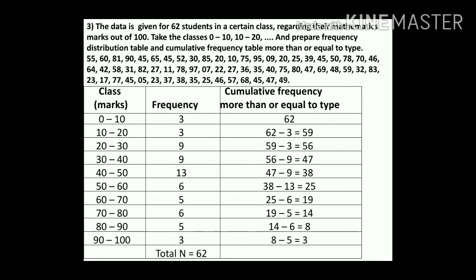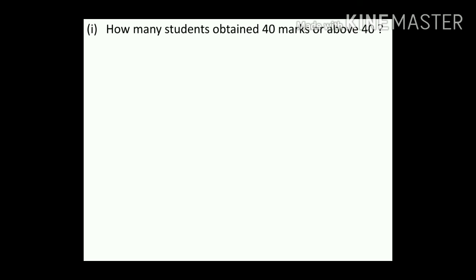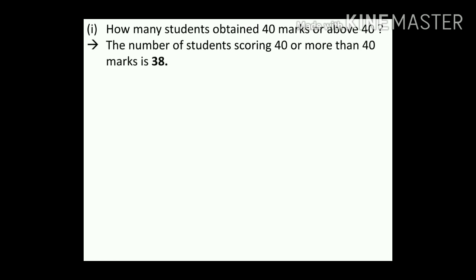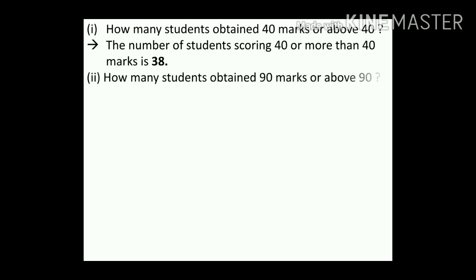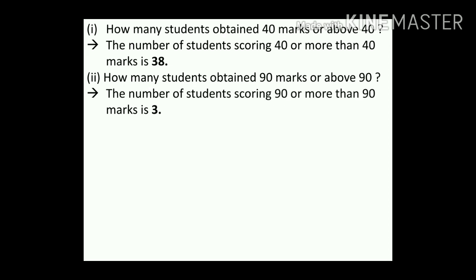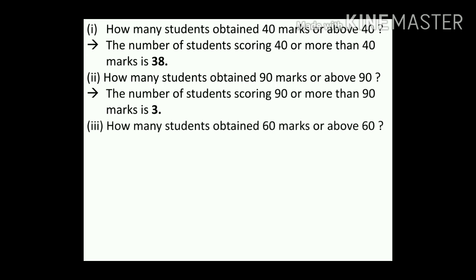Now answering sub-questions based on the table. Question 1: How many students obtained 40 marks or above? Look at class 40–50 in the more-than type cumulative frequency column — the answer is 38 students. Question 2: How many students obtained 90 marks or above? The cumulative frequency for class 90–100 is 3 students.